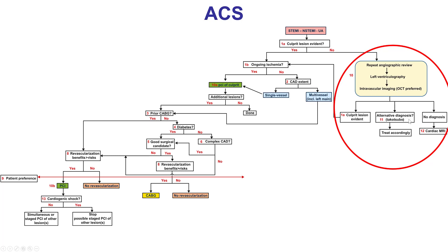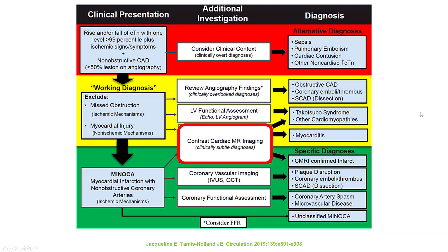If this does not work, then cardiac MRI can help establish a diagnosis. This is also reflected in the AHA consensus statement on the diagnosis of MINOCA. Cardiac MRI is the next step after angiographic review and LV assessment to look, first of all, if there is an MI, or myocarditis, Takotsubo, or any other syndromes.